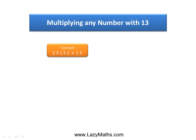Here's an example of multiplying any number with 13: 23,132 times 13. The first step is to insert two zeros, one in the front and one in the back of the number. So we insert the two zeros, one in the front and one in the back.